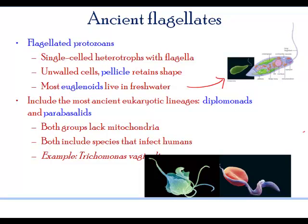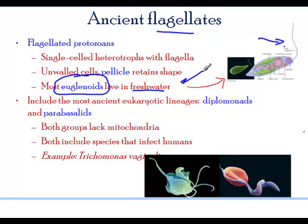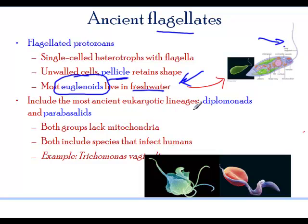The ancient flagellates, or ancient protozoans, are called flagellates because they had a flagella. One example is the euglena, which is usually present in fresh water. Any time you grab water from a river or pond and look at it under the microscope, it's very likely you will see lots of euglena. It looks like a little slipper with a little flagella. It is an unwalled cell with a pellicle that helps it retain shape. These represent the most ancient eukaryotic lineage.